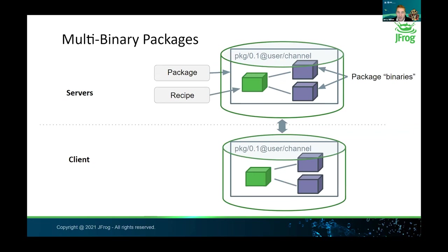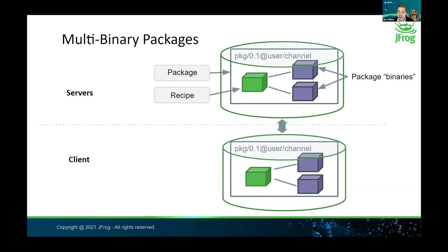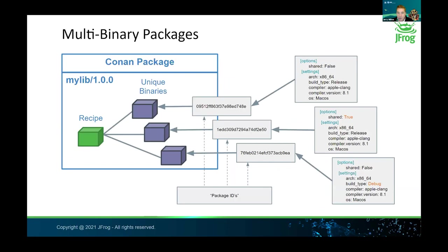While Conan is similar to other package managers in high-level architecture, it's very unique in its package model. The string shown here — pkg/0.1@user/channel — is an example of what we call a recipe reference in Conan. This is the most simple logical identifier for packages in Conan. One of the unique things about this recipe reference is that it can represent any number of separate physical binaries with unique build configurations. This package model — in which one identifier represents any number of unique build configurations — is one of Conan's major innovations.